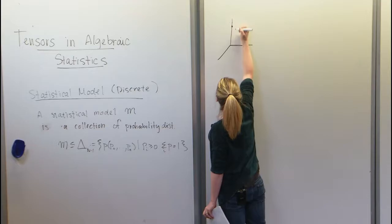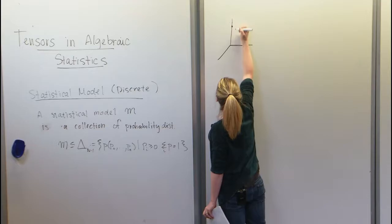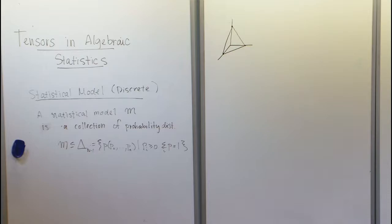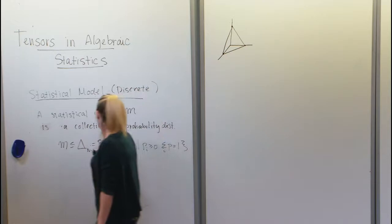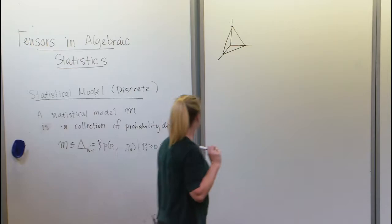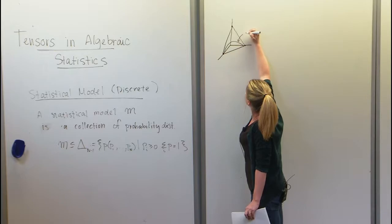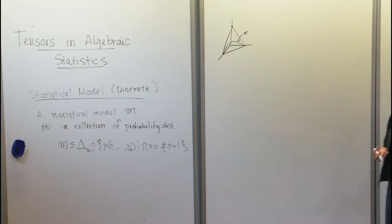The picture you should always have in mind: if I'm in three dimensions, the simplex is the set of all probability distributions when my state space has size N, and our model is some subset of that. In general, our model is going to be a semi-algebraic set. We're going to think about p not as a vector but as a tensor.